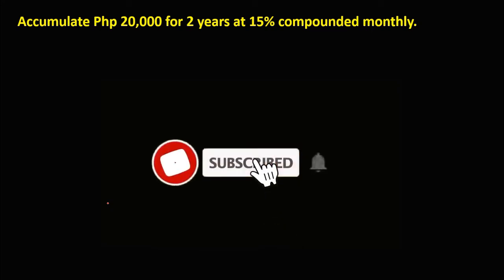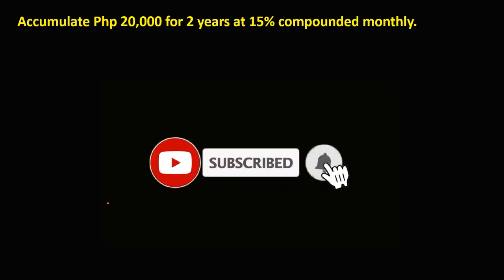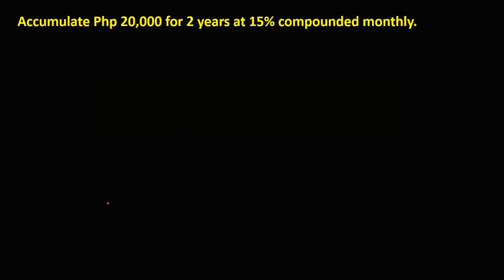Let's have this problem: accumulate 20,000 pesos for 2 years at 15% compounded monthly. For this problem, we're looking for the maturity value or the future value. But first, we need to list all the given. Since we have 20,000 pesos, this is the principal.